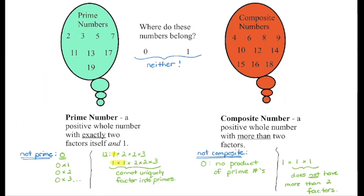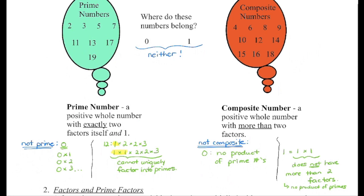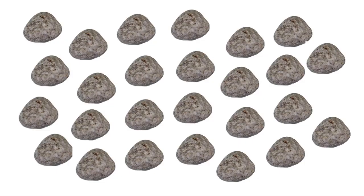Going back to the beginning and looking at 0 and 1: a prime number has exactly two factors, itself and 1. 0 is not prime because 0 times any number gives 0, so it does not have exactly two factors. 1 used to be considered prime hundreds of years ago, but it was taken off the list because keeping it on would mean we couldn't factor each number into its primes in a unique way. A composite number must have more than two factors — 0 is not composite because we cannot write 0 as a product of its prime numbers, and 1 cannot be written as more than two factors. So 0 and 1 are neither prime nor composite. Back to our rocks — you probably first learned to count using objects, and the final course you can take in high school mathematics is calculus, which simply means a pebble used for counting.